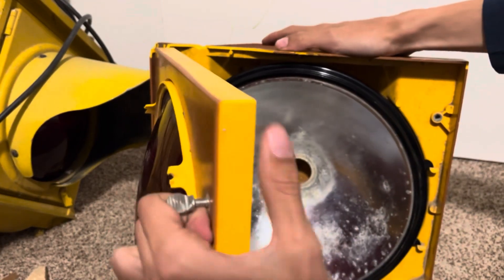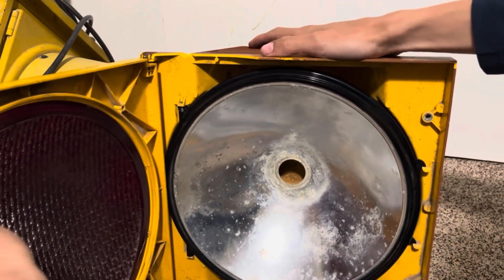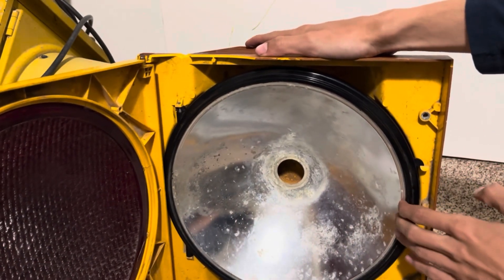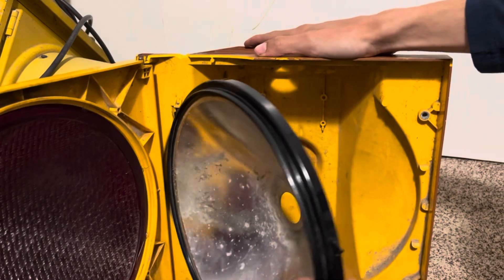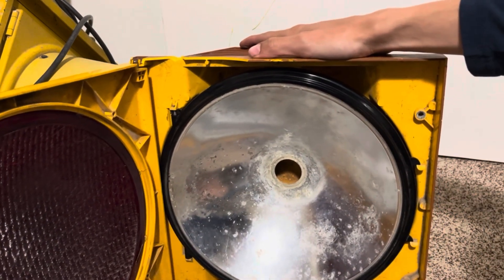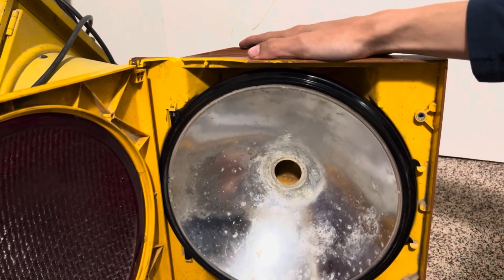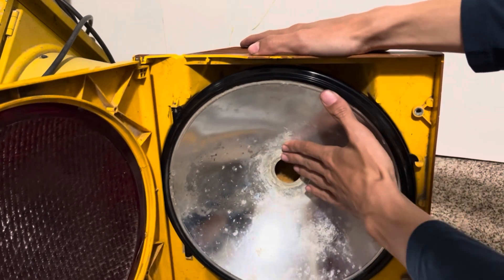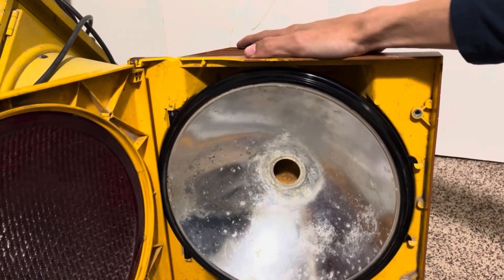When I open this up, the reflector inside this is actually the reflector from that Kentron. I took it out and replaced it. This signal originally had a perfect pristine reflector and socket inside of it, but I took that out and put it inside the Kentron.